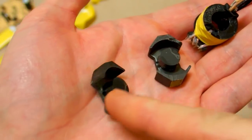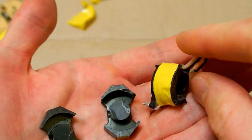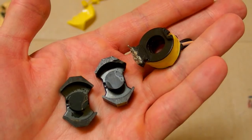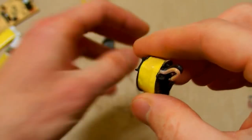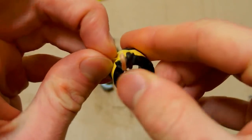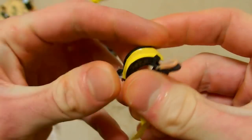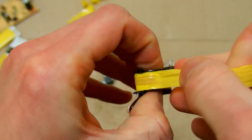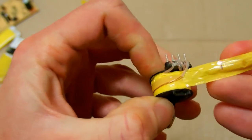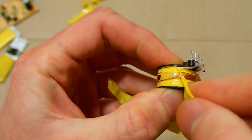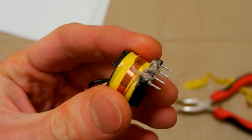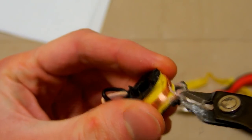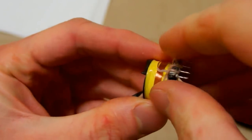So here you can see the ferrite core and the spool with the windings. So let's unwind it. There's sticky tape on it.